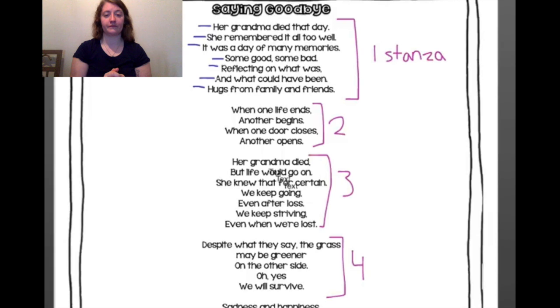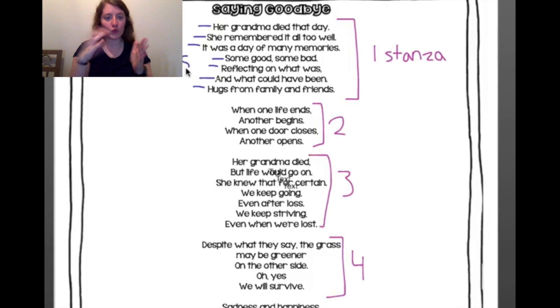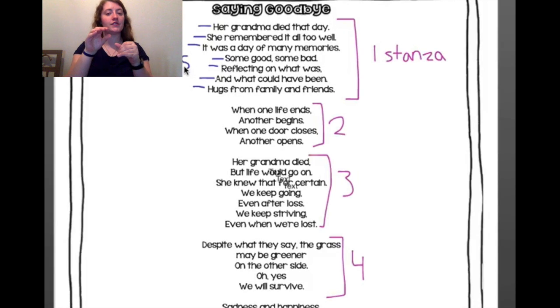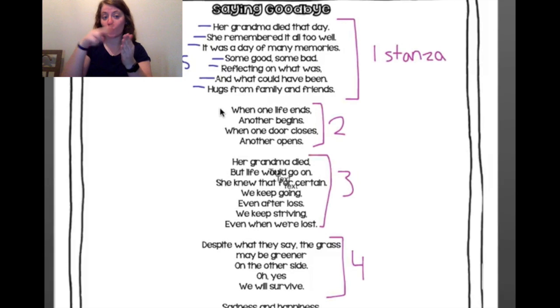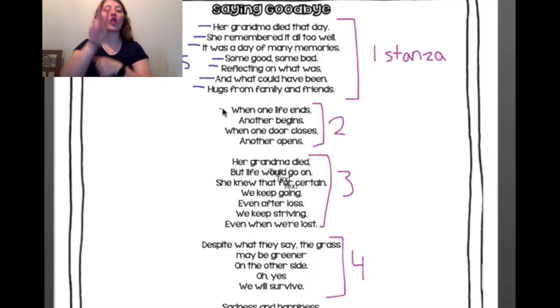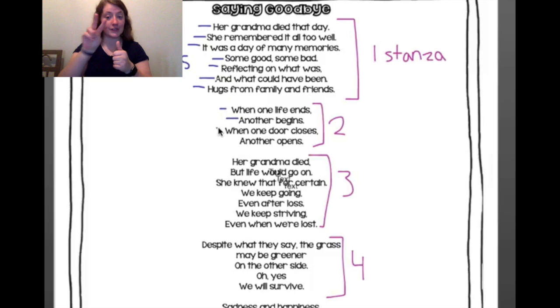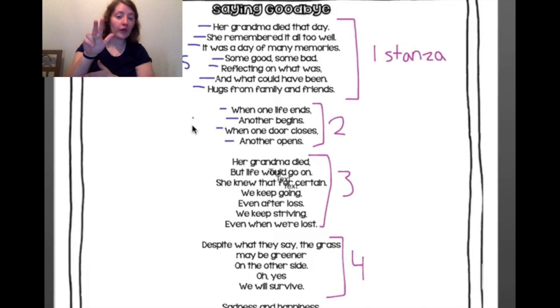And that is what lines and stanzas are — it's very simple. You don't have to read a poem to figure out how many there are; you can just look at it. And if we look at our second stanza, there's one, two, three, four lines.